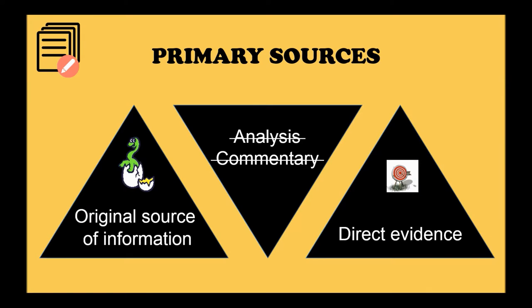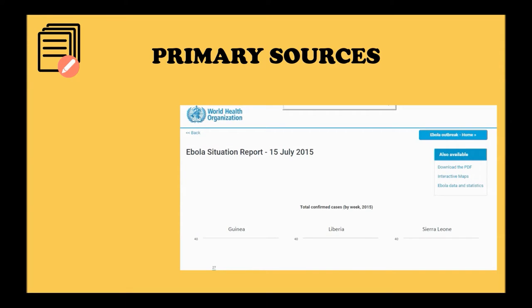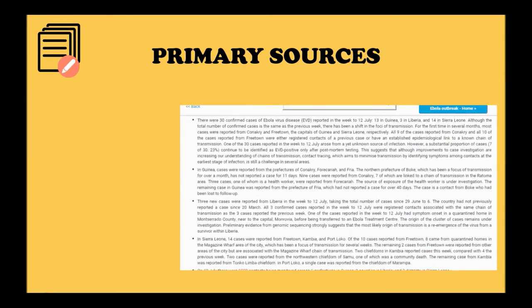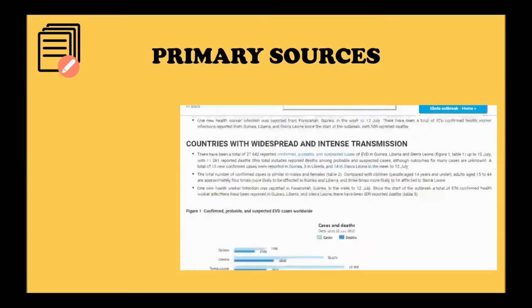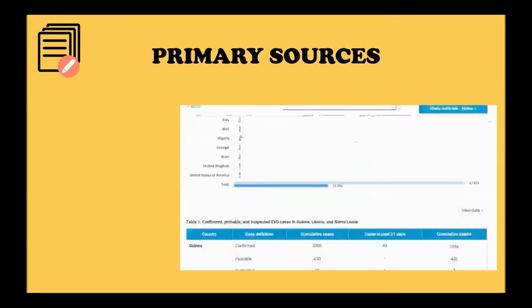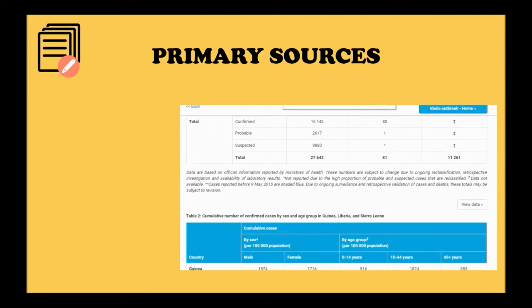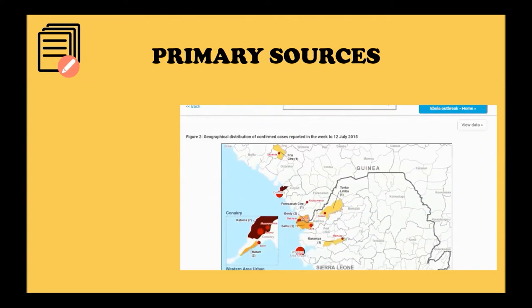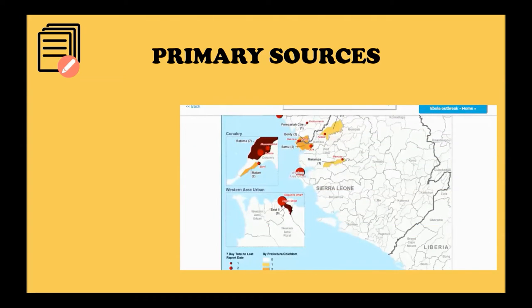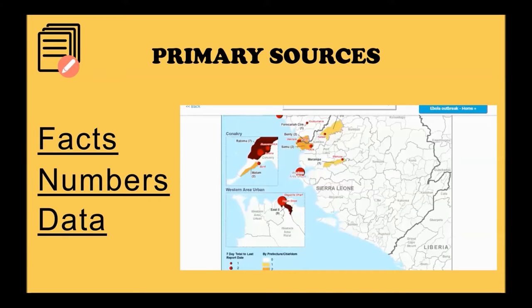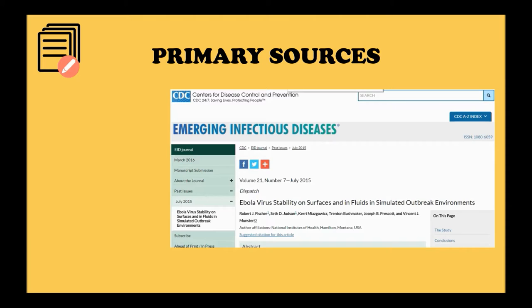Primary sources are the original source of information. They're free of outside analysis or hindsight, and they offer direct evidence. News reports or reports from government agencies or non-profit organizations can be considered primary sources. Here's an example — a situation report from the World Health Organization from July 2015 stating numbers of those infected by Ebola, fatalities, location of the outbreak — things like facts, numbers, data.